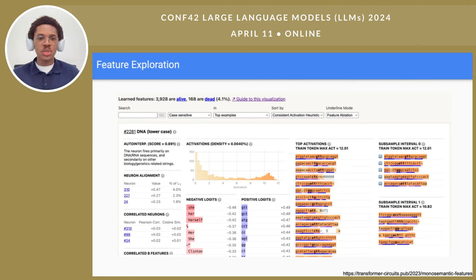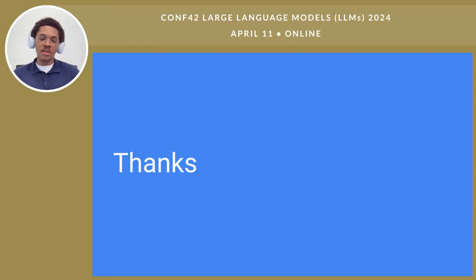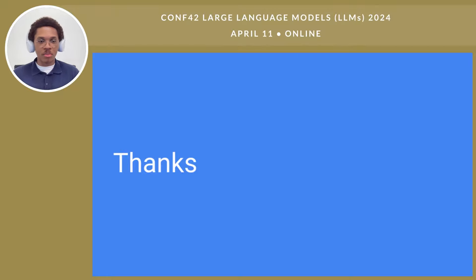The future of this work will basically look like scaling up these autoencoders to work on much larger models and uncover more useful features going forward. Thanks for joining, and I encourage you to read more of the papers out there. The Anthropic blog posts and informal papers are a great place to start, as they basically represent where the frontier is right now. Thank you for the time. See you later.